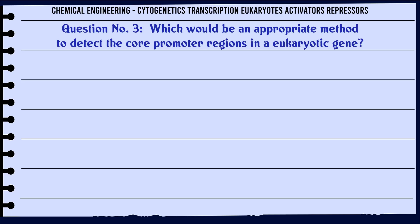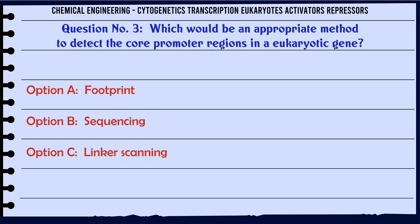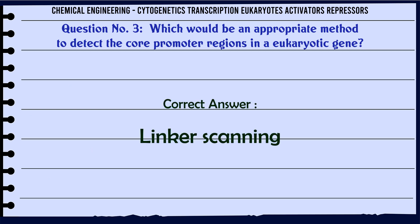Which would be an appropriate method to detect the core promoter regions in a eukaryotic gene? A. Footprint. B. Sequencing. C. Linker scanning. D. S1 endonuclease. The correct answer is Linker scanning.